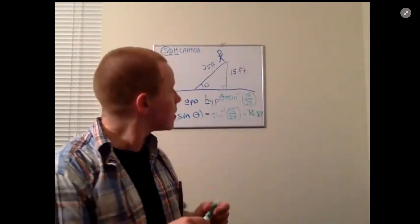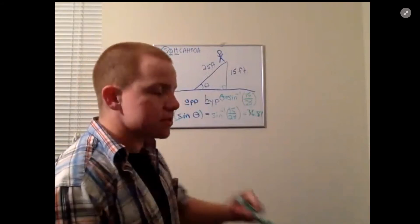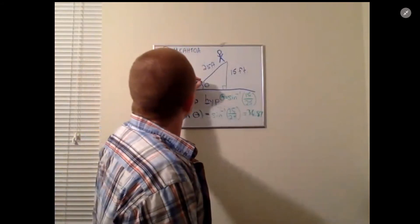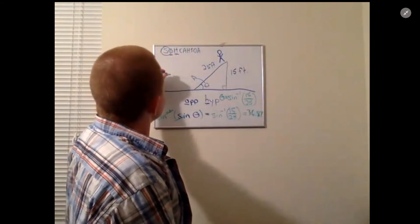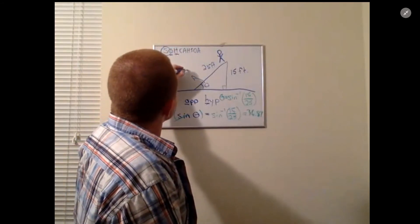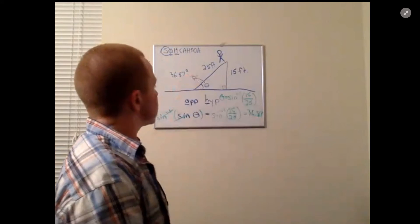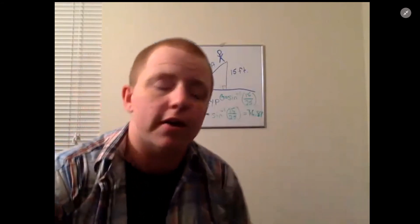Don't forget your units, that's degrees. So theta right here is going to equal 36.87 degrees. Don't forget your units, that's degrees. So that's how you find the angle of inclination for a triangle.